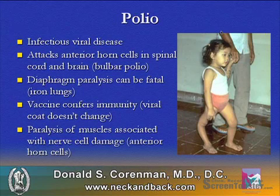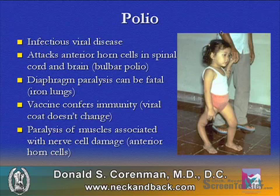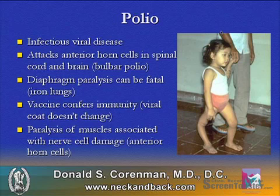Polio, thank goodness, is not seen much anymore, but is still around. It's an infectious viral disease that attacks the anterior horn cells in the spinal cord and brain. If it attacks in the brain, it's called bulbar polio. Diaphragm paralysis can be fatal, and the old iron lungs back in the 1930s were quite common. A vaccine confers immunity, as this viral coat doesn't change, unlike in HIV. Paralysis of muscles is associated with the nerve cell damage in the anterior horns.